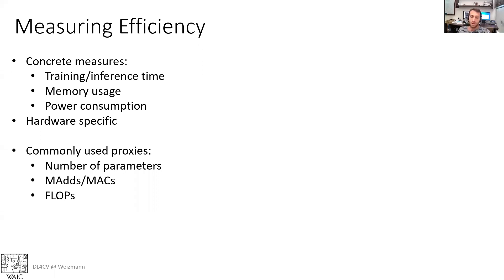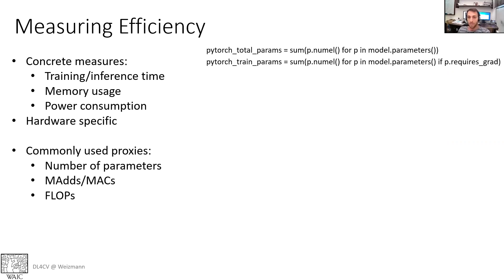To measure efficiency, we often use proxies because they're easier to measure. One obvious proxy is the number of parameters. In PyTorch, you can use the numel function to sum up the number of parameters in your model, and you can also do it for the trainable parameters using requires_grad.